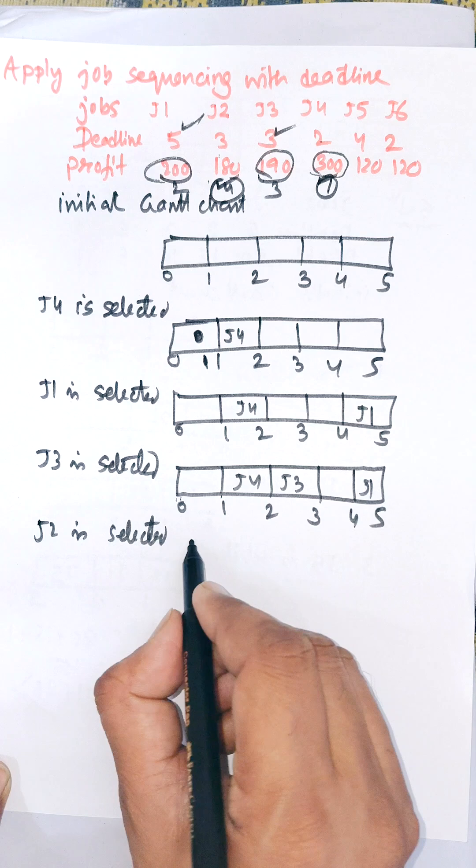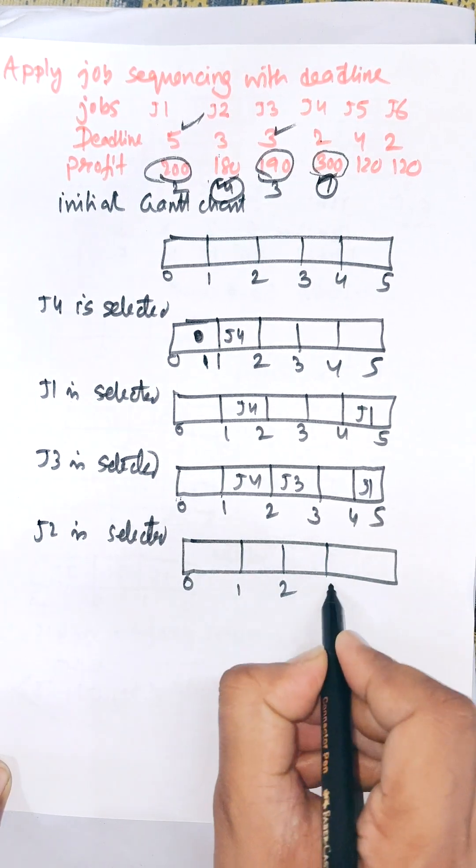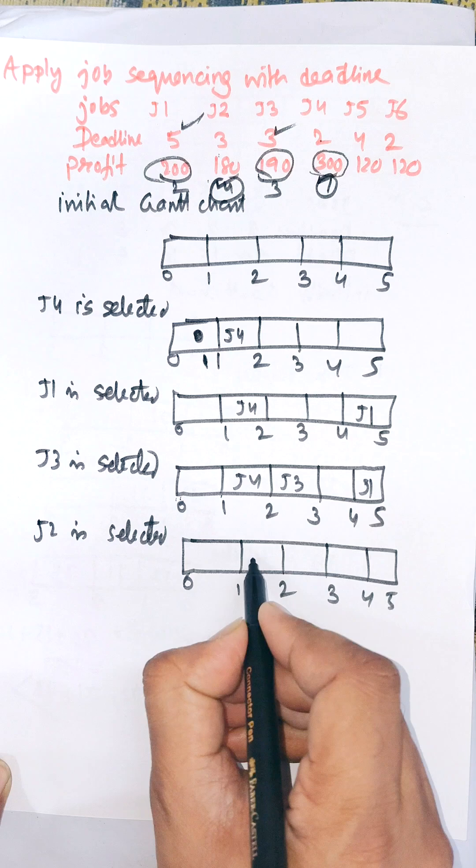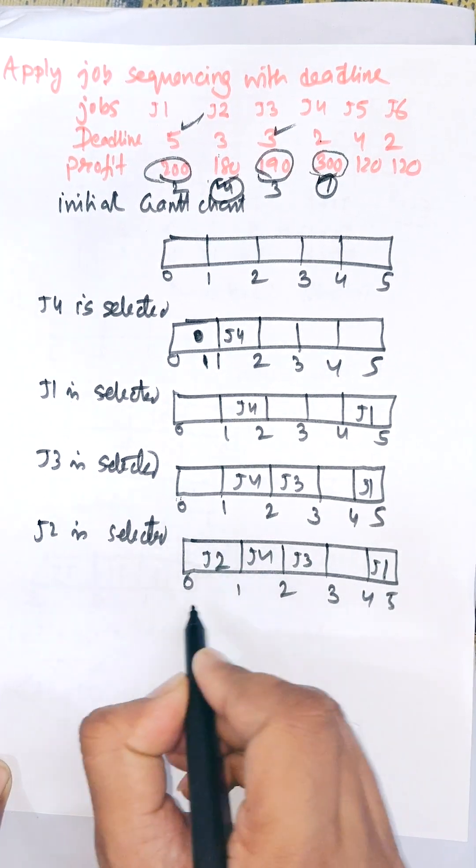So J2 will be allocated in between 0 to 1: 0, 1, 1, 2, 2, 3, 4, and 5. That is J4, J3, and this one is J1. J2 is selected in between 0 to 1.